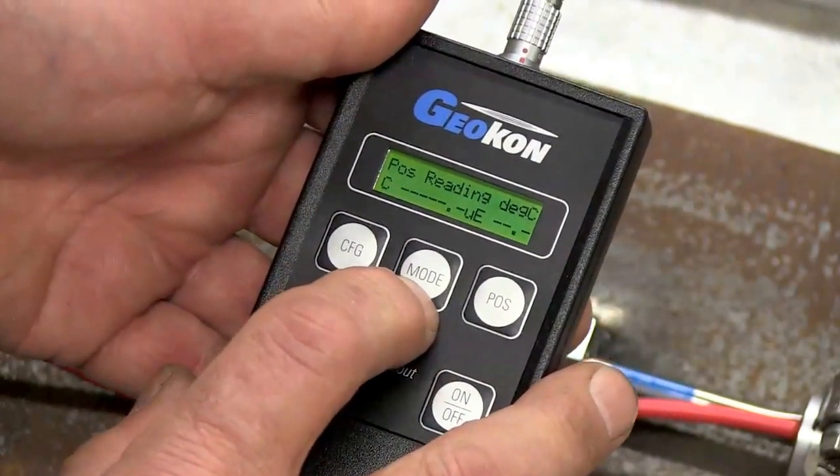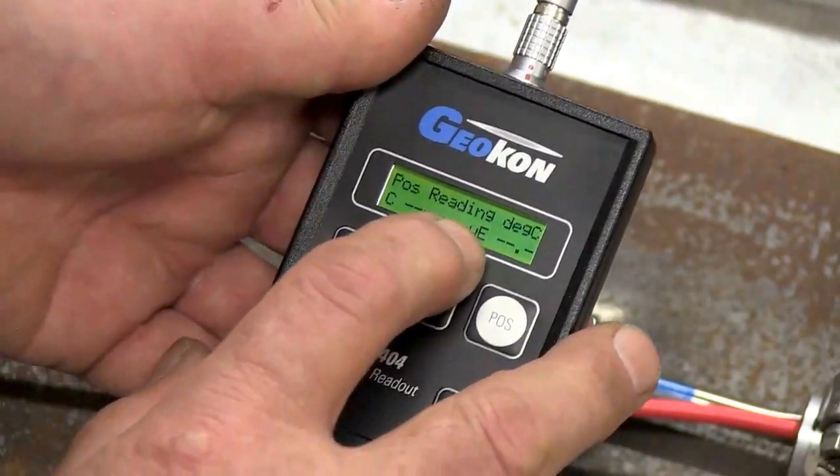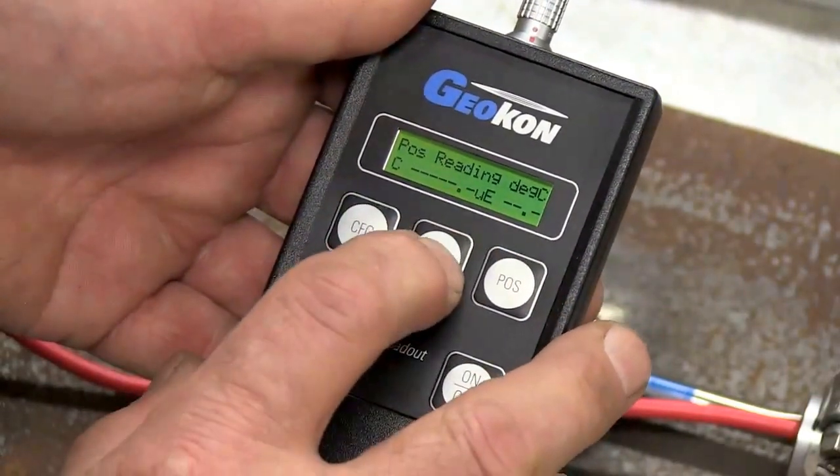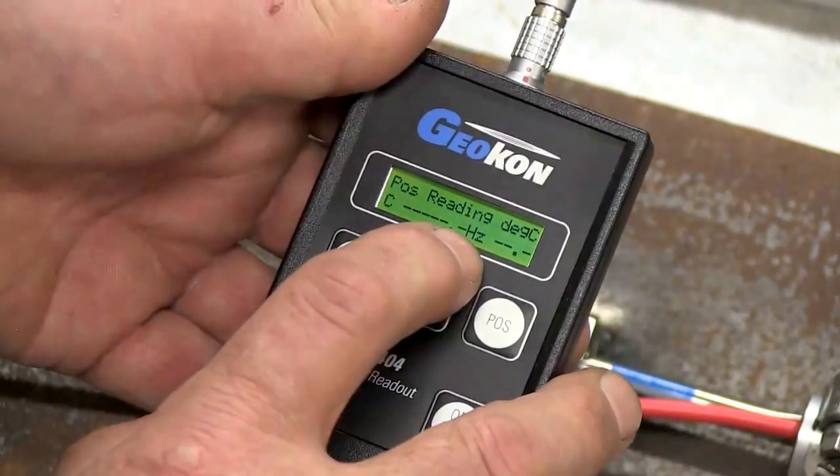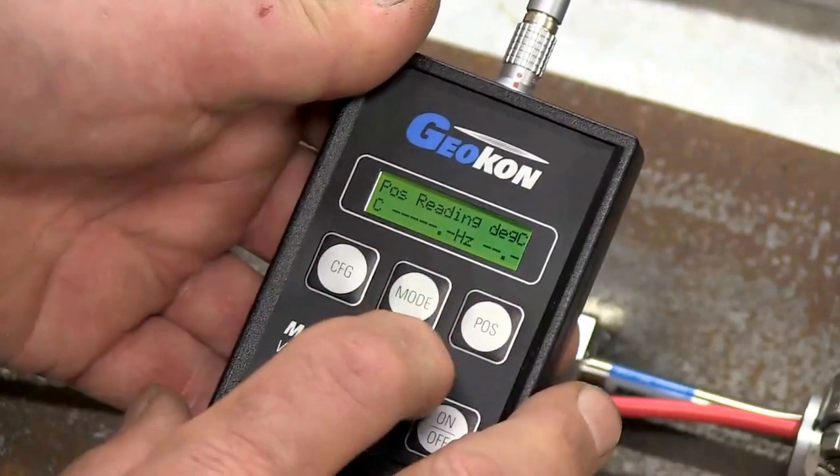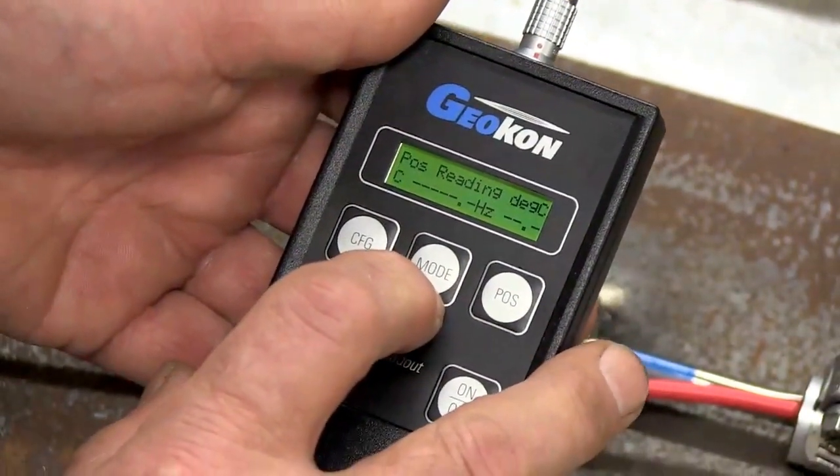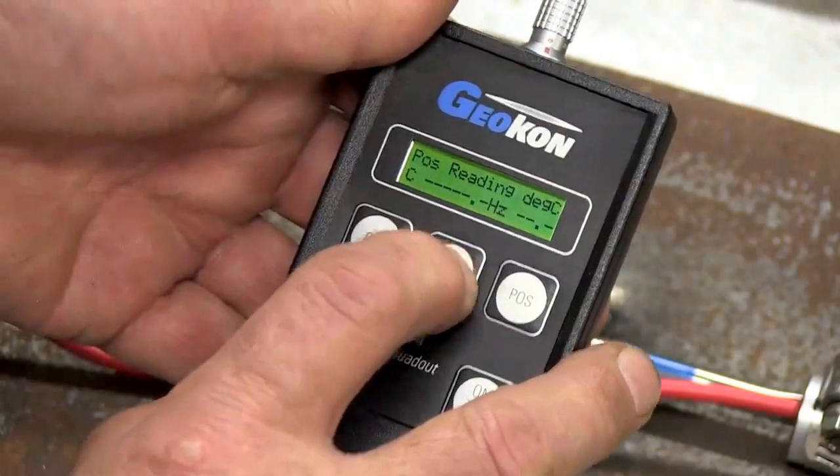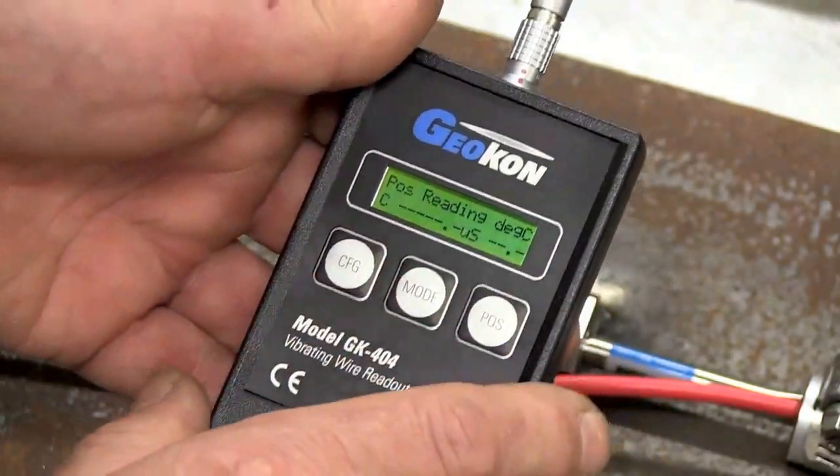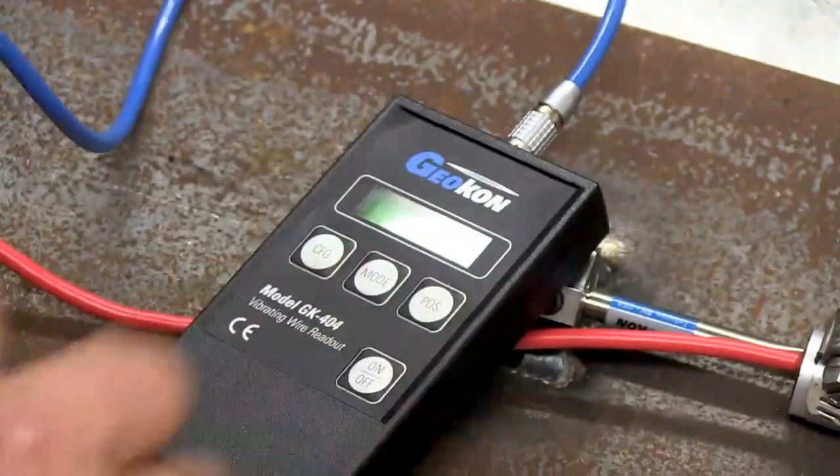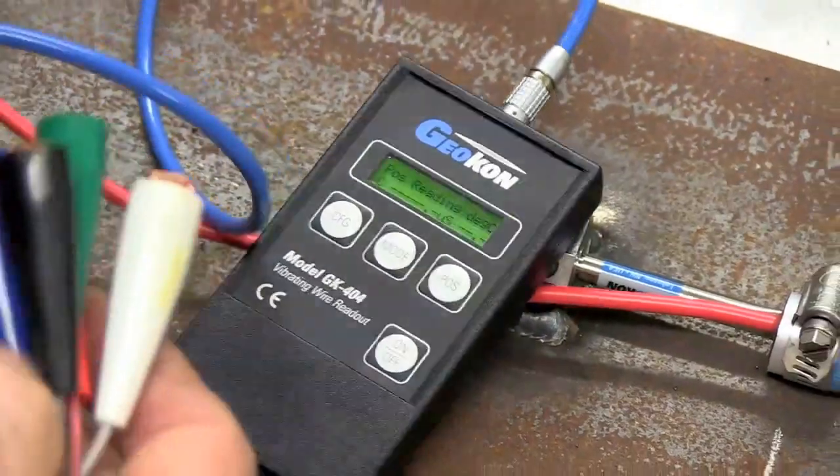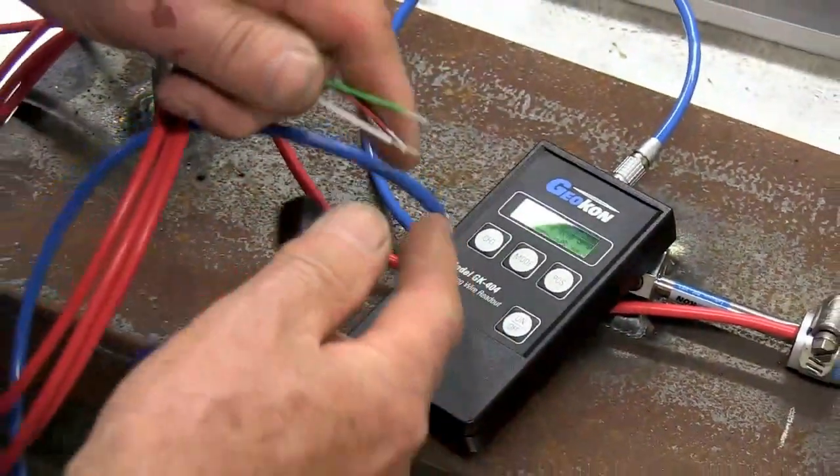In this case, we want microstrain, which is what that symbol means. The other mode might be hertz, which would be the frequency. But we want, at this time, to read it out in microstrain. So we set it to microstrain. Then, we connect the leads. A very simple operation, color for color.